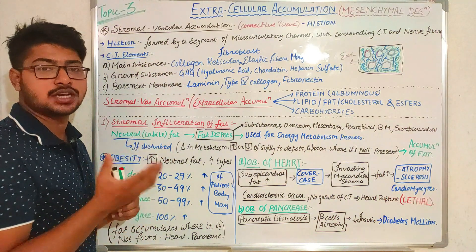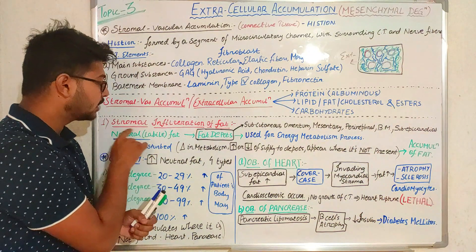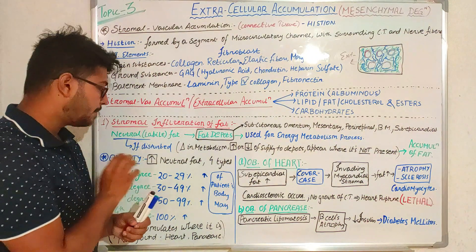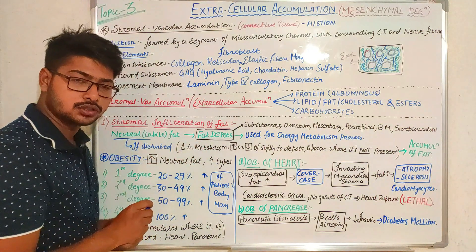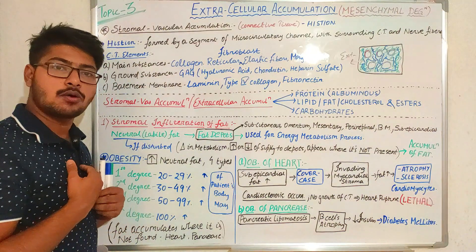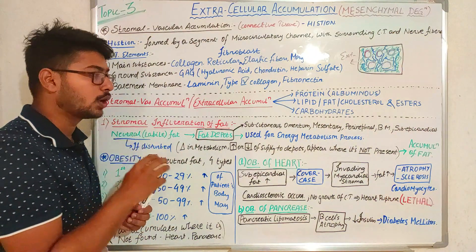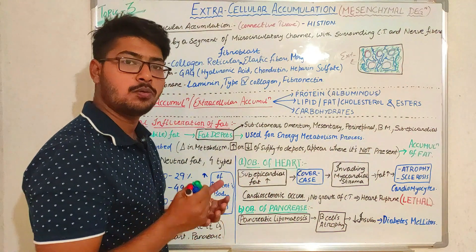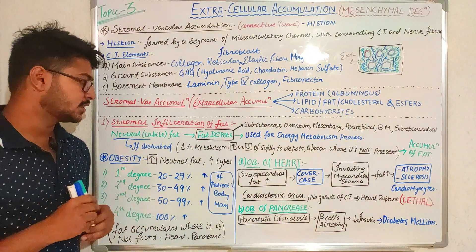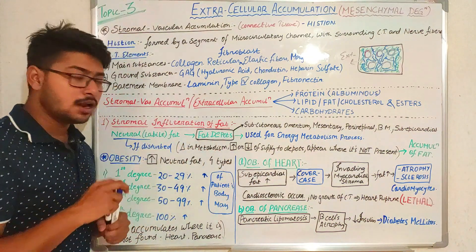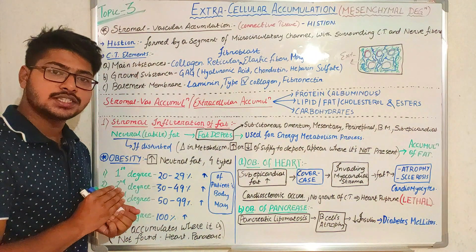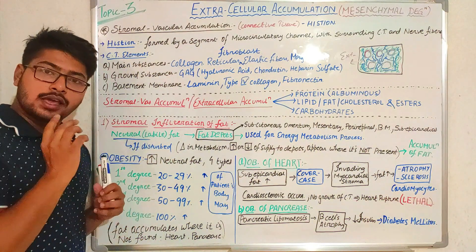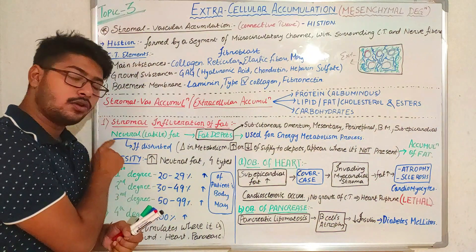First, we discuss fat or cholesterol accumulation — specifically the stromal infiltration of fat. Our body contains neutral fats present in the fatty depots. Fatty depots are spaces or regions in our body where neutral fats are located, for example in the subcutaneous region, omental region, mesentery region, perinephric region, bone marrow, and subepicardial regions. These fatty depots are helpful for energy metabolism.